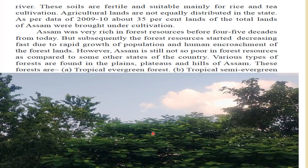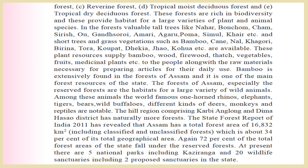Tropical evergreen forests are those where trees don't shed their leaves — they always look green. Semi-evergreen forests partially shed leaves. These forests are rich in biodiversity and provide habitat for large varieties of plant and animal species. Valuable tall trees found in Assam's forests include Nahar, Bonshom, Sham, Siris, Gondasarai, Amari, Agaru, Poma, Chemul, and Hare.